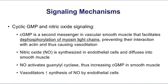Cyclic GMP and nitric oxide are very important pathways because cyclic GMP is a second messenger in vascular smooth muscle. Later, when we go through cardiovascular drugs, we'll look at exactly how cyclic GMP can relax smooth muscle. I'm going to tell you the end of the story now: how does nitric oxide relax smooth muscle? It ends up causing dephosphorylation of myosin light chains — that's the final step — and we'll tell the rest of the story later on.